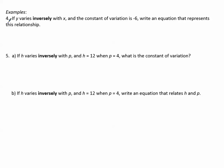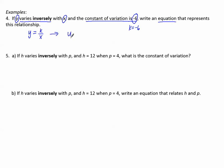Example four: if y varies inversely with x, I write y equals k divided by x, and the constant of variation is negative six, so k equals negative six. Write an equation that represents this relationship. I already have the inverse variation form and just plug in k, giving y equals negative six divided by x.